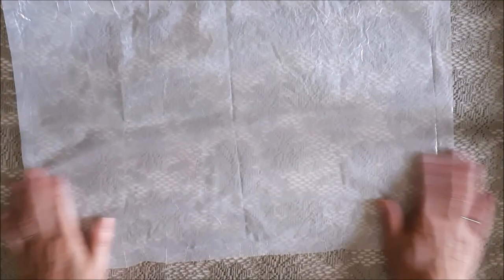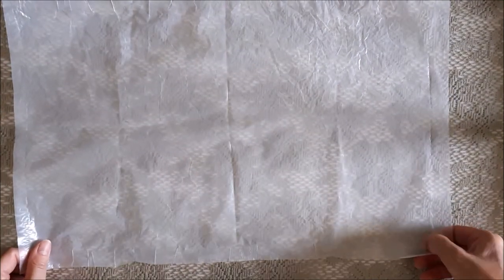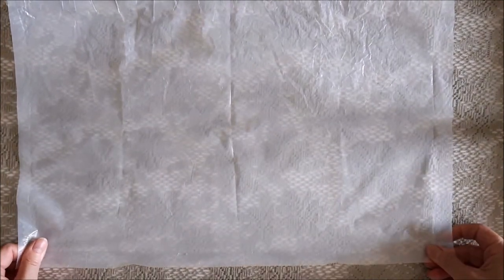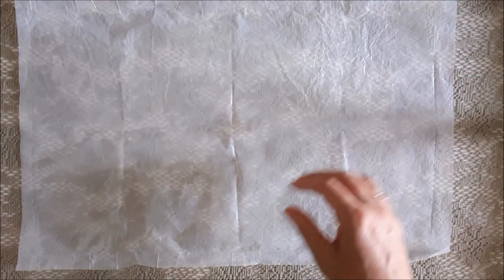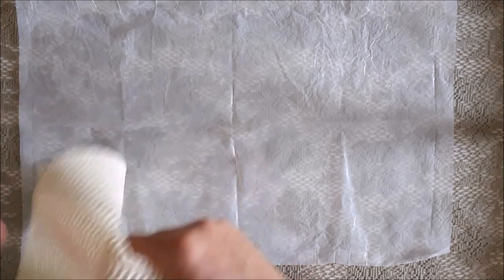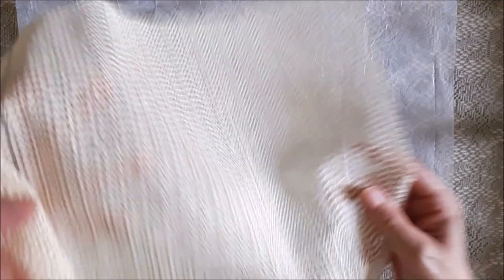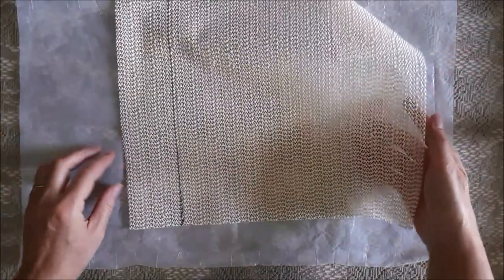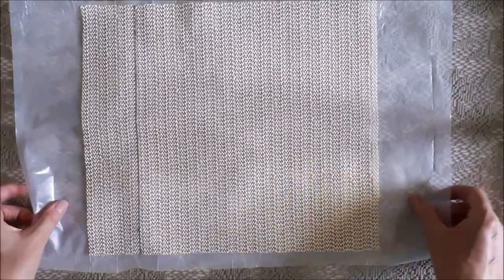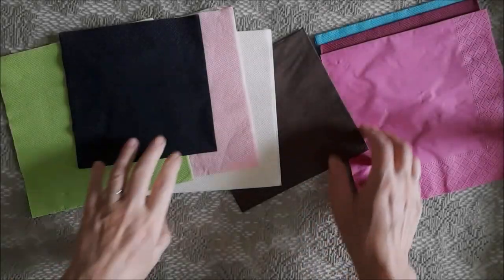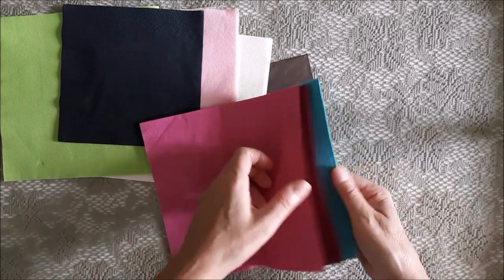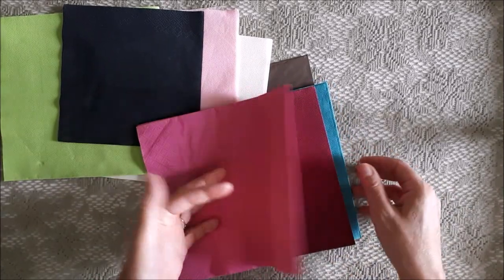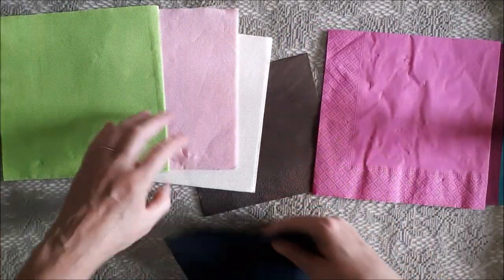So now we have our plastic sheet in place with our cut out runner on top, and now we are ready for our second secret ingredient: napkins. I'm sure a lot of you already guessed that.